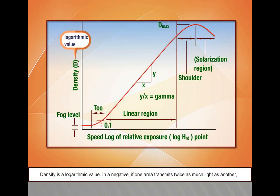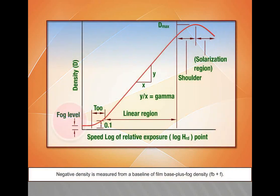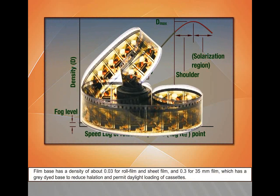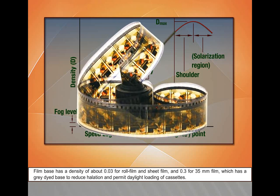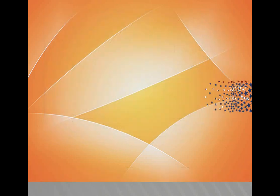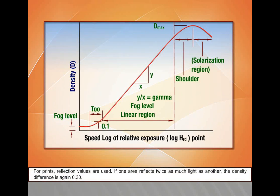Density is a logarithmic value. In a negative, if an area transmits twice as much light as another, the density difference is 0.30 (the logarithm to base 10 of 2); if it transmits 10 times as much, the density difference is 1.0. Negative density is measured from a baseline of film base plus fog density. Film base has a density of about 0.03 for roll film and sheet film, and 0.3 for 35mm film, which has a grey dyed base to reduce halation. Fog refers to those silver halide crystals that develop whether or not they are exposed to light. For prints, reflection values are used — if one area reflects twice as much light as another, the density difference is again 0.30, measured from a baseline of paper base white.